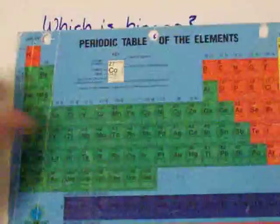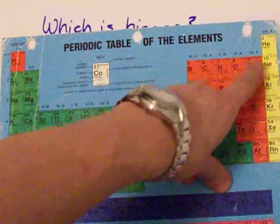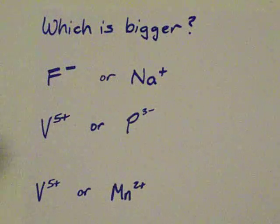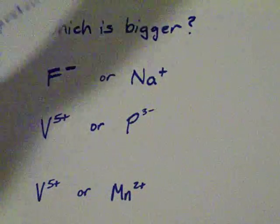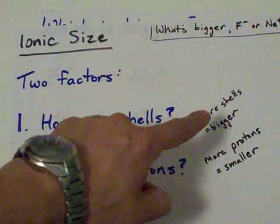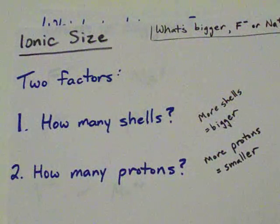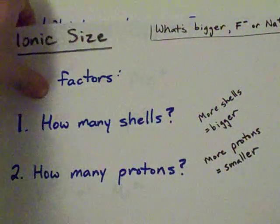Fluorine normally has nine electrons, but now it has ten, because it has an extra electron. That's what gives it the minus one charge. So, they both have ten electrons, which means they have the same number of shells as well.